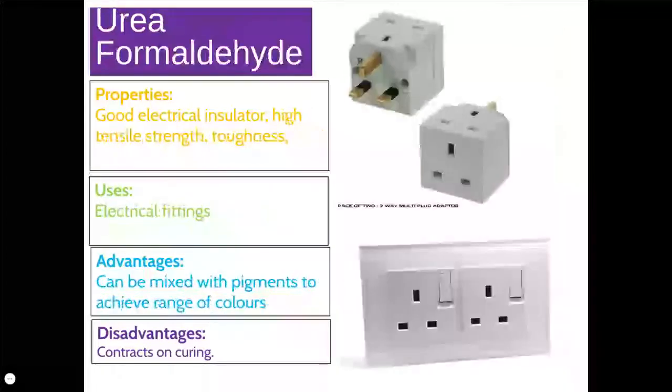The last material we'll look at is urea formaldehyde, another thermosetting plastic. It has fantastic electrical insulation, high tensile strength, and is very tough. Most importantly, it won't melt when heat is applied, so it has lots of uses in products that get warm or hot. You'll have seen urea formaldehyde in electrical fittings and plugs, where its electrical insulation and resistance to melting under heat provide an important safety function.